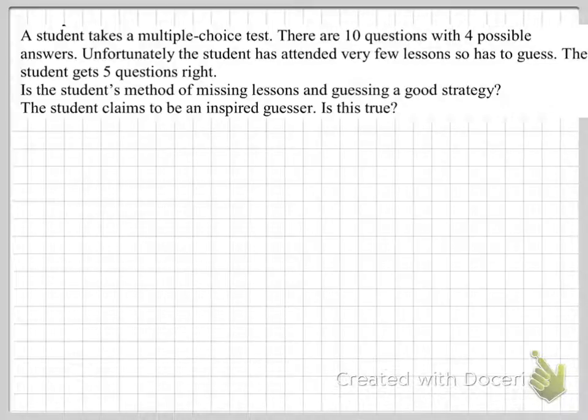So, if the student's method of missing lessons and guessing, is it a good strategy? And also, the student claims to be an inspired guesser. And we want to find out whether that's true. So, first thing we should do is set up our hypothesis. And before we do that, we need to define what P is. So, let's say, let P be the probability the student guesses correctly.